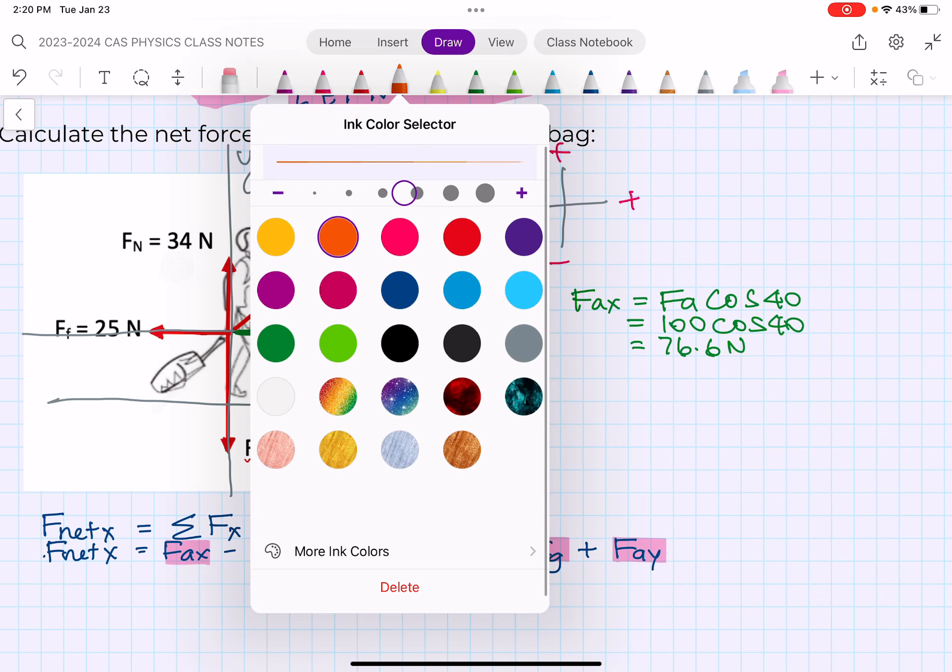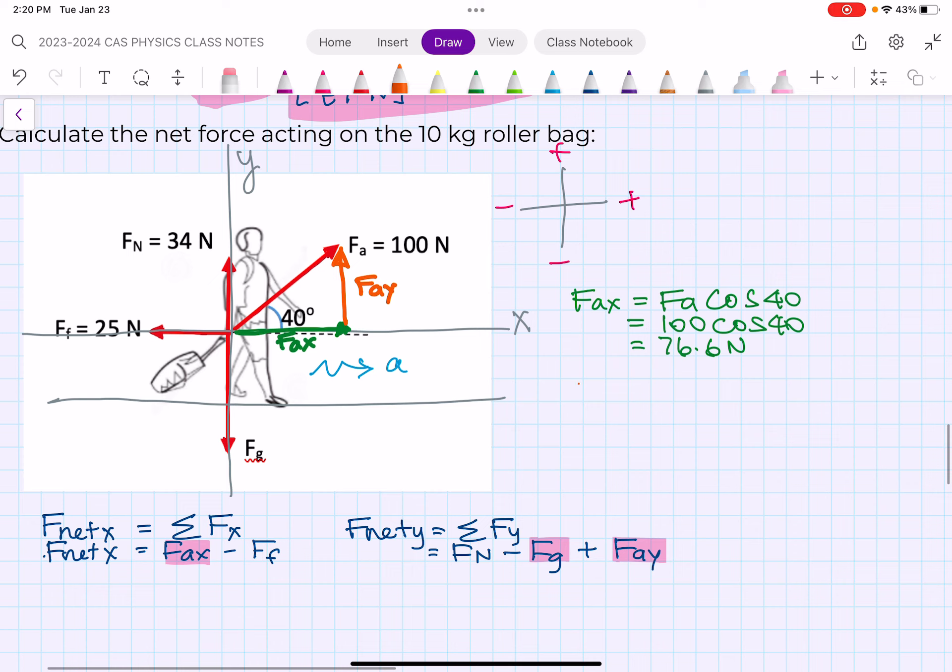And then FA_y - we want to know what's the applied force in the y direction. It's equal to FA sine 40, and this just equals 100 sine of 40. So then we get, doing the math, we get 64.279 newtons, alright.